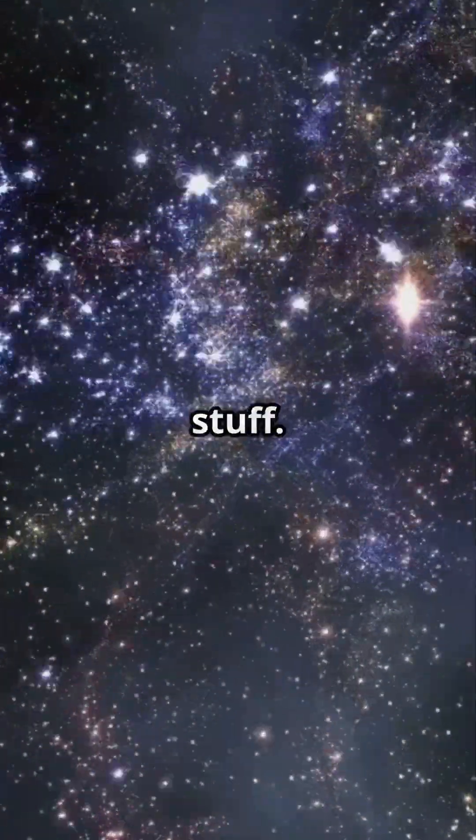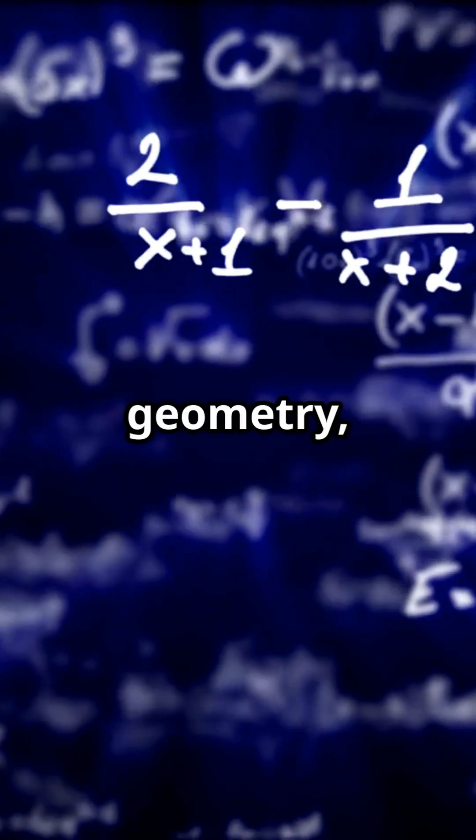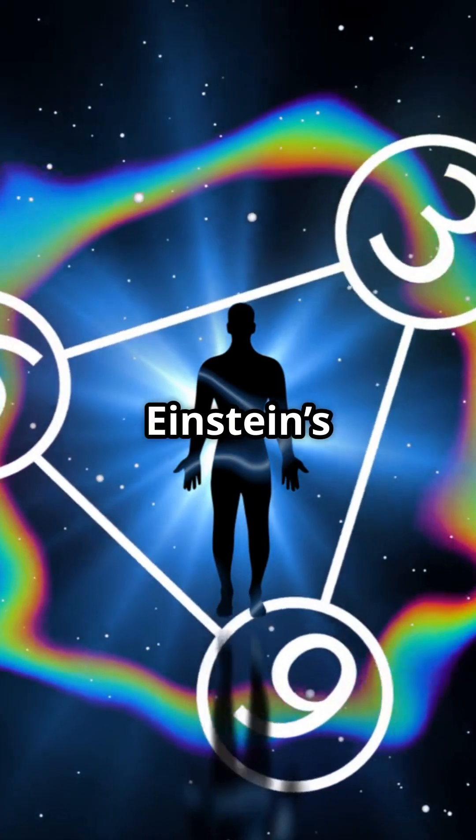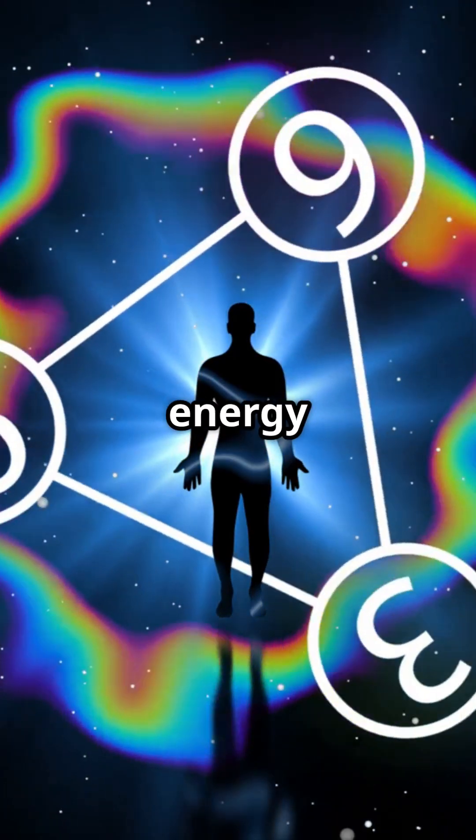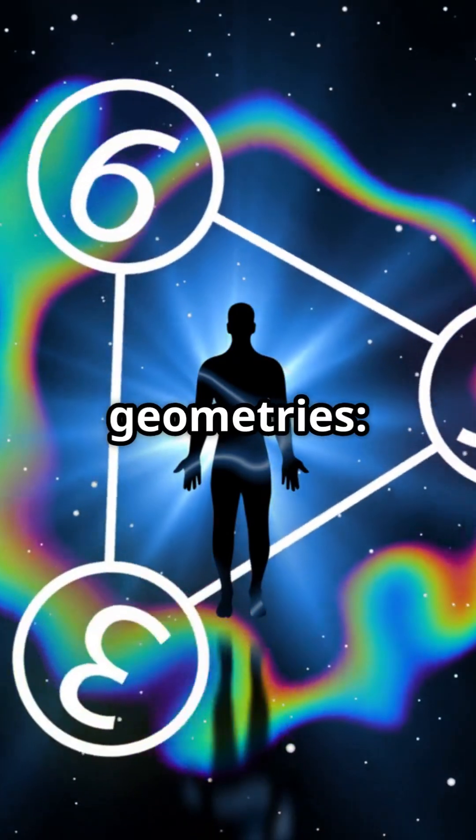Now let's get into the juicy stuff. The shape of the universe is determined by its geometry, topology, and expansion dynamics. According to Einstein's general relativity, the universe's shape depends on its total energy density and can follow three possible geometries.